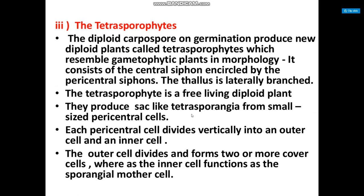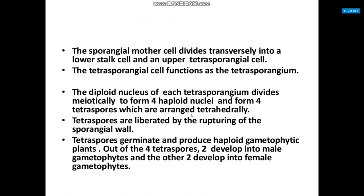The third phase is the tetrasporophyte. The diploid carpospore on germination produces a new diploid plant called the tetrasporophyte, which resembles the gametophytic plant in morphology. It consists of a central siphon encircled by pericentral siphons. It produces thick-walled tetrasporangia from small pericentral cells. The outer cell divides to form two or more cover cells, while the inner cell functions as the sporangial mother cell. This cell divides transversely into a lower stalk and upper tetrasporangial cell. The diploid nucleus of the tetrasporangium divides meiotically to form four haploid nuclei, and the tetraspores are liberated by the rupturing of the sporangial wall.